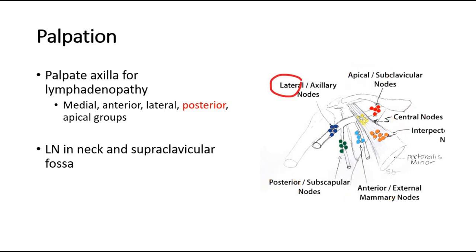For example, for the right axilla we will use our left hand to palpate. When palpating for the lymph nodes at the right axilla, we use our right hand to support the patient's arm and then use our left hand to palpate for enlarged nodes — and vice versa for the left axilla. This is for the medial, anterior, lateral, and apical groups. For the posterior group, highlighted in red, we need to examine from the back of the patient while the patient's hands are on their shoulders.